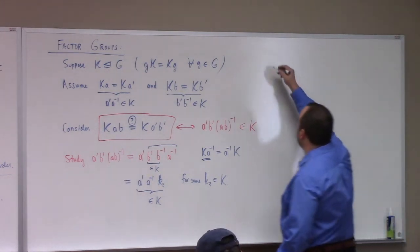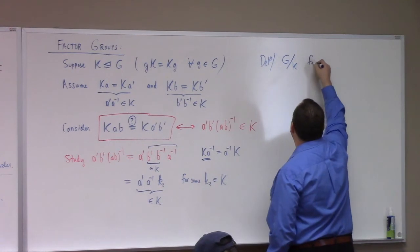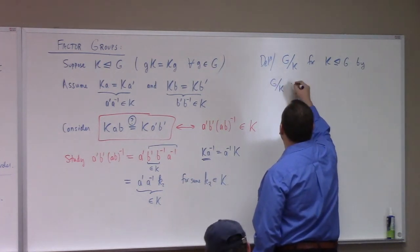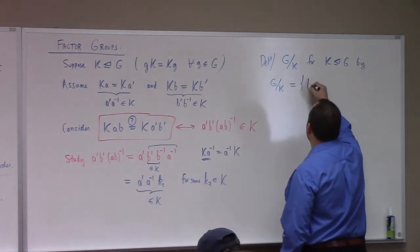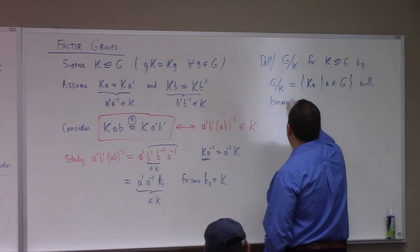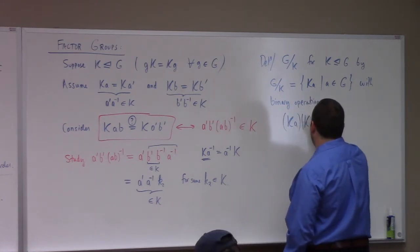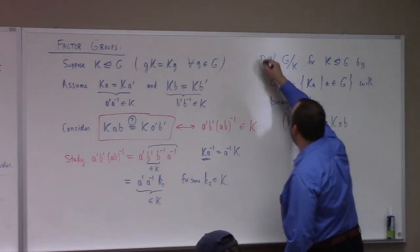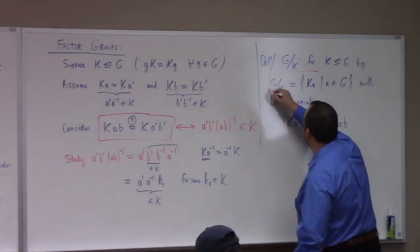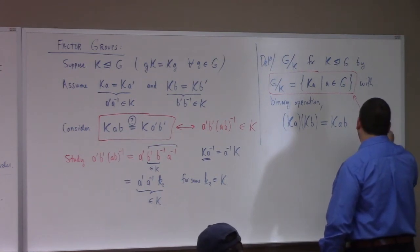So with this in hand, I can make a definition. We define G mod K — for K normal in G — as follows: as a point set, G mod K is the set of cosets {Ka | a in G}, with binary operation Ka · Kb = Kab. This is called the factor group of G by K.